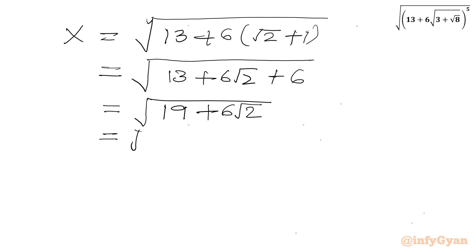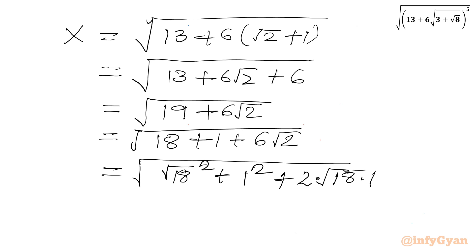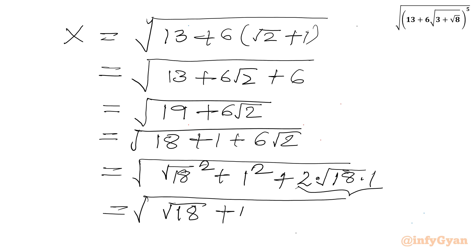Now I write 19 as 18 plus 1, and then it is plus 6 times root 2. Now 18 can be written as (√18)² and 1 as 1². This middle term is 2 times √18 times 1, which equals 2 times 3√2 = 6√2. Applying the same identity a² + 2ab + b² = (a+b)², we get (√18 + 1)². Canceling the square root and square, x equals √18 + 1.